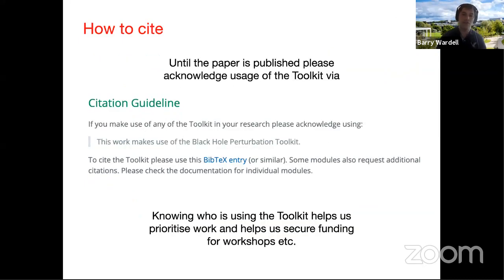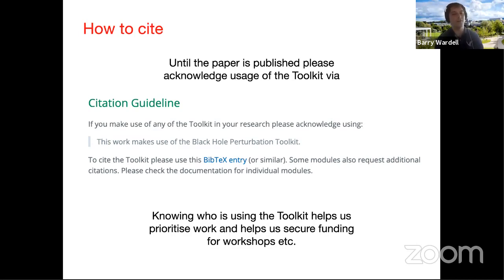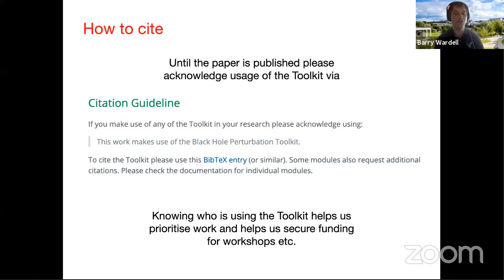In the interim, the best way to acknowledge the toolkit is to include the sentence 'This work makes use of the Black Hole Perturbation Toolkit' in your paper's acknowledgements — that sentence is fairly unique and allows us to keep track of who has found the toolkit useful. There is also a BibTeX entry available to download from the toolkit website. This is important both for keeping the community motivated and for helping us prioritize high-interest areas and secure funding for workshops like this one.